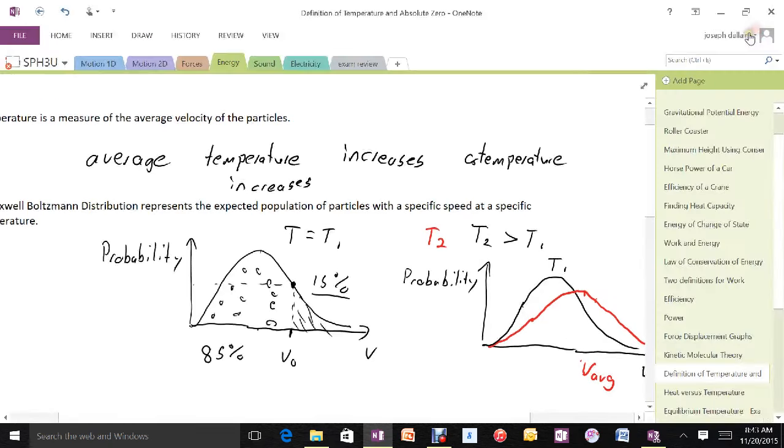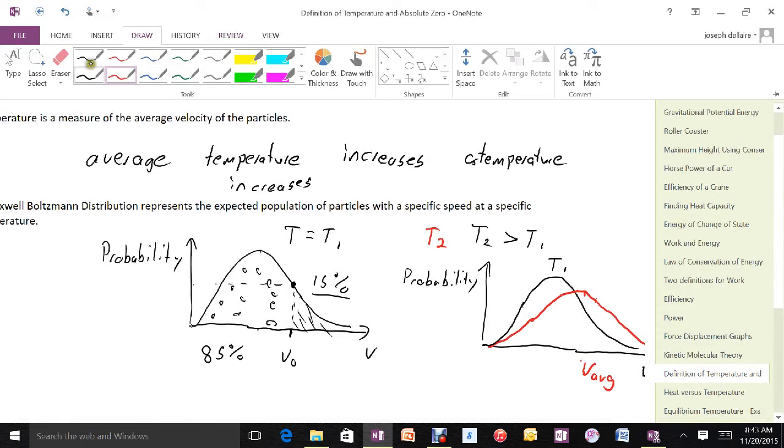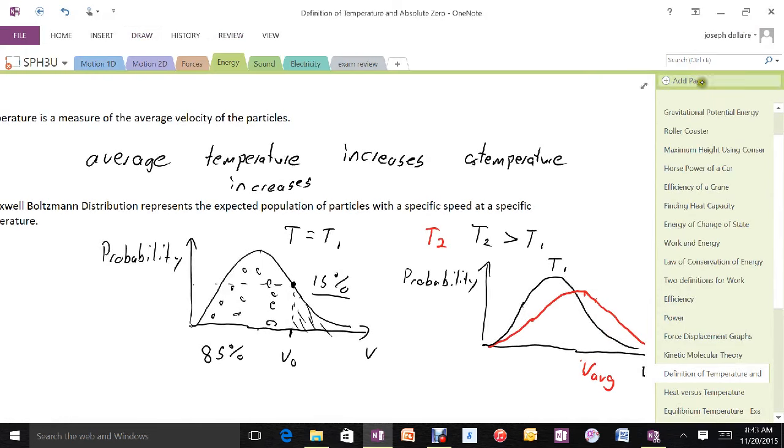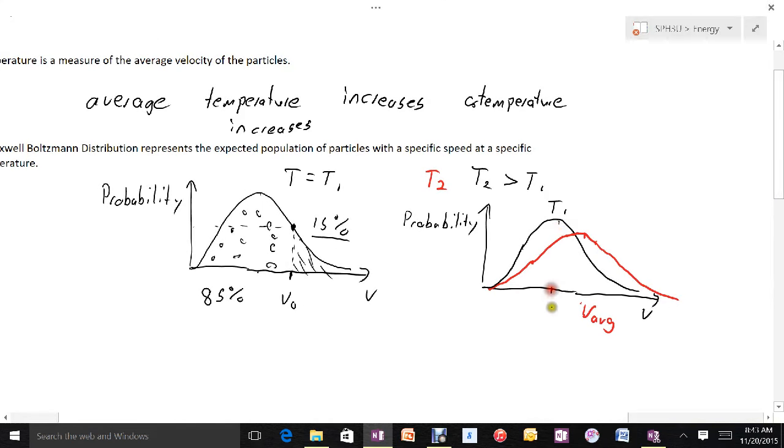See, for T2, the average velocity would be somewhere around here in comparison to T1's average velocity, which would be down here. What that means is, overall, the particles are on average going a little bit faster.